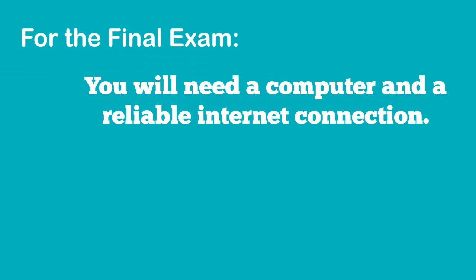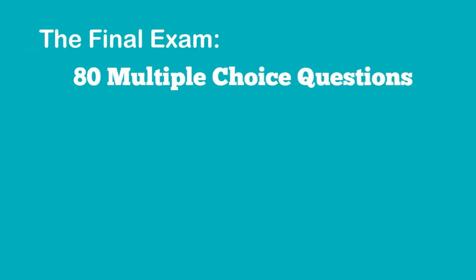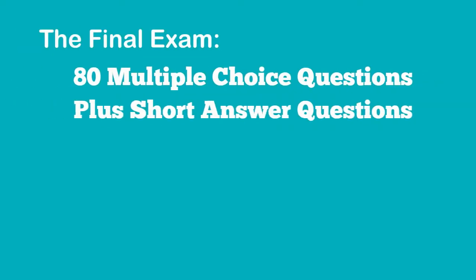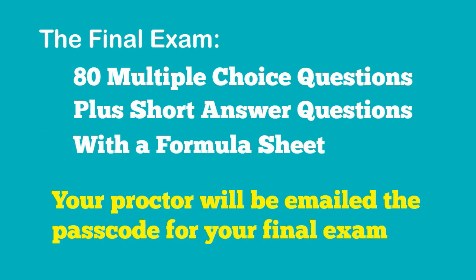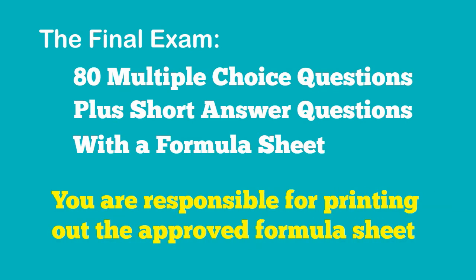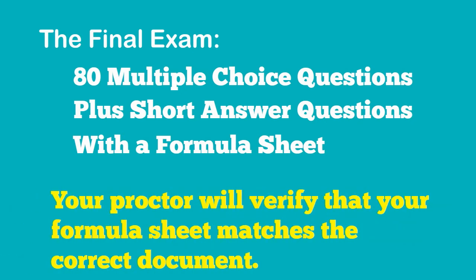To write the final exam, you will need a computer and a reliable internet connection. The final exam consists of 80 multiple choice questions plus a series of short answer questions, and you will be allowed a formula sheet. Your proctor will be provided with the passcode for your final exam. It is your responsibility to print the allowed formula sheet, and your proctor will verify that your formula sheet matches the correct document.